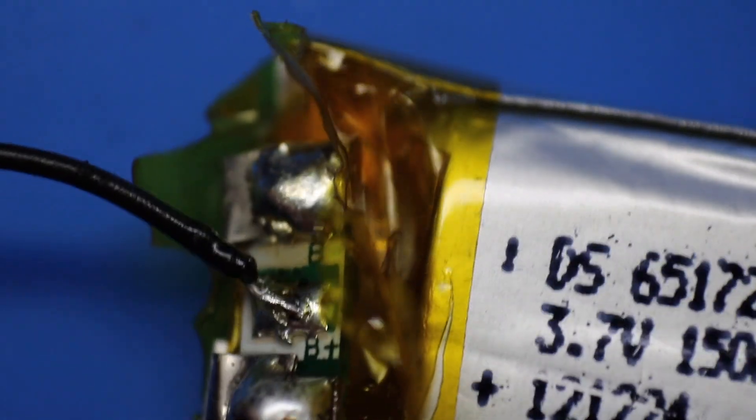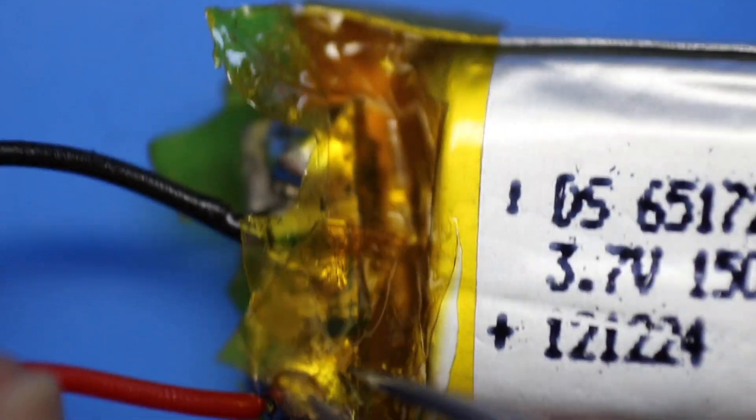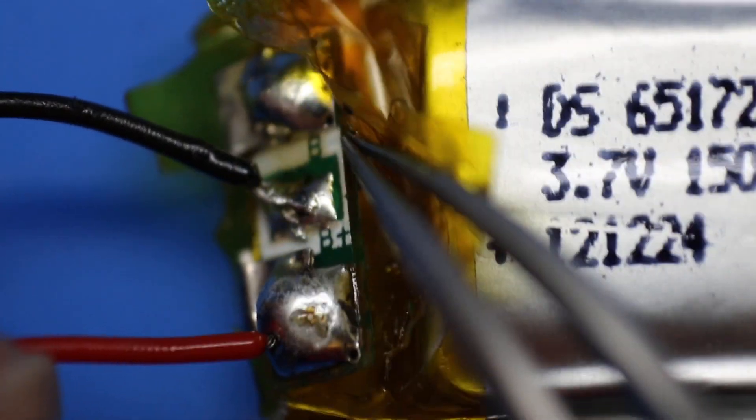What I want to do is get this Kapton tape and cover it over. I have extra Kapton tape I'm going to put on here. But you can also just peel this back down if you were careful. You know, steal it from the other side if you want to cover up these connections.